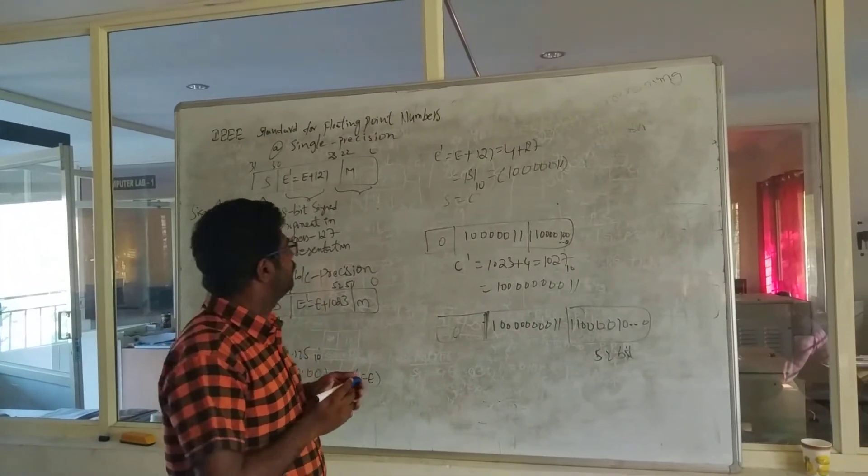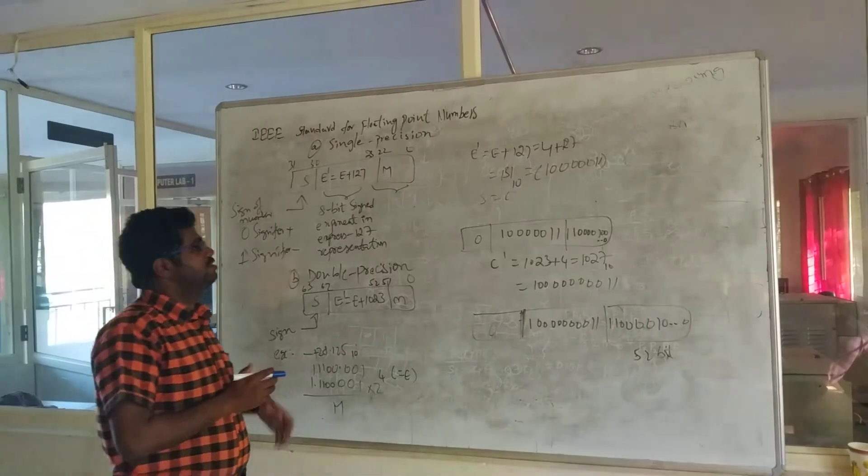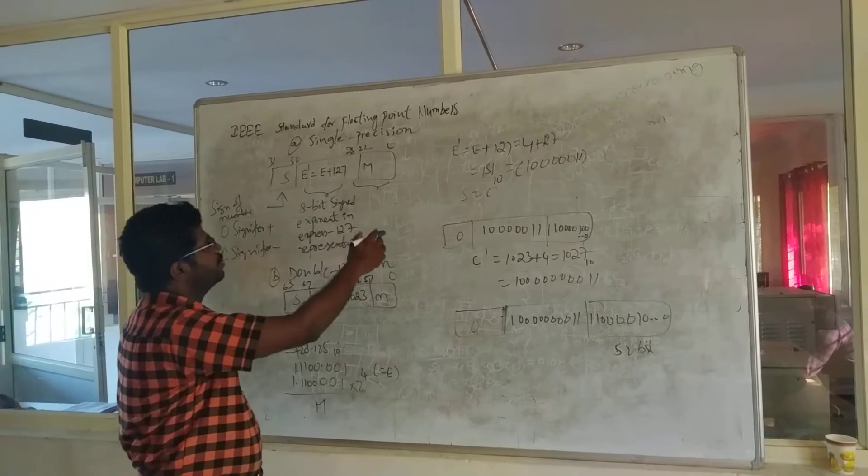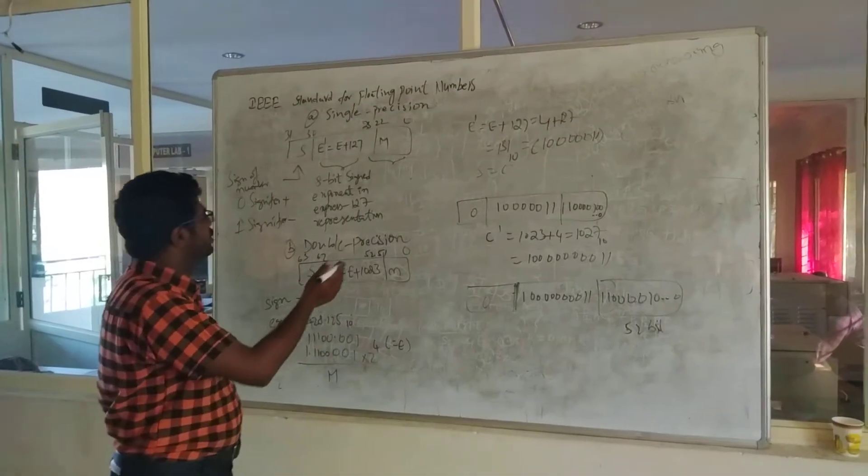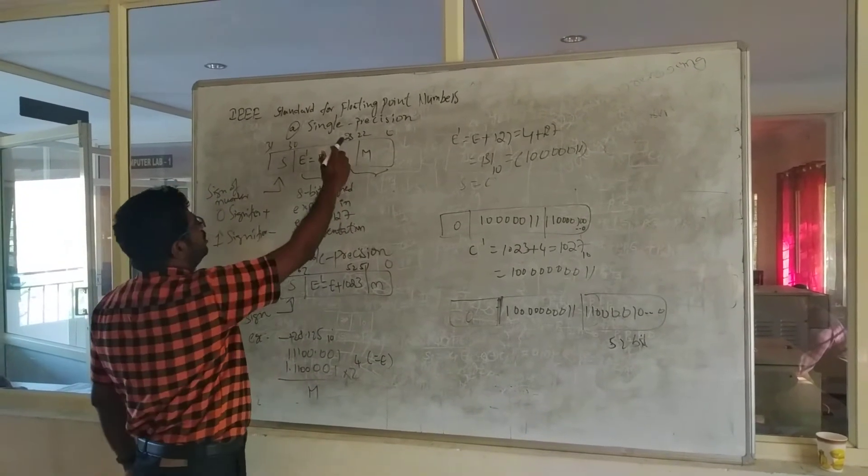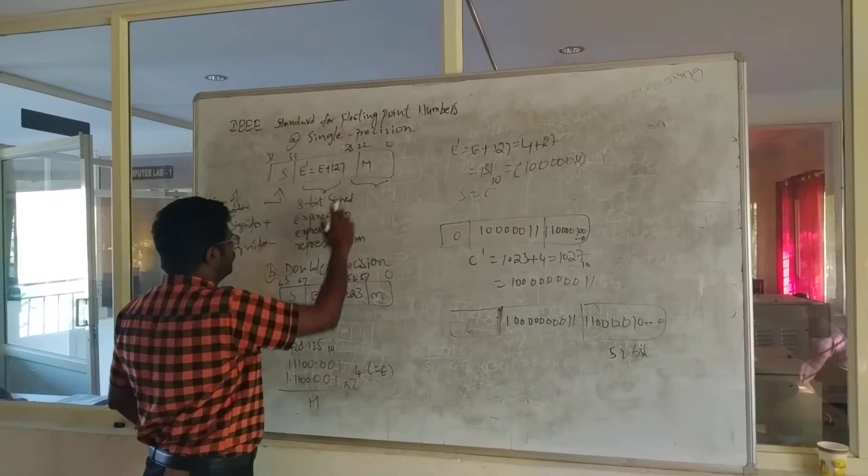Let's go for the topic. Generally in computers, the way of understanding is different. Computers have a lot of precision types like half precision and so on. Here we are going to consider two things: single precision and double precision, where we'll see small examples.